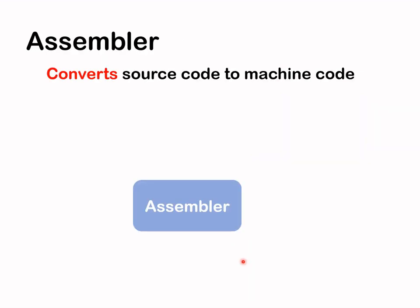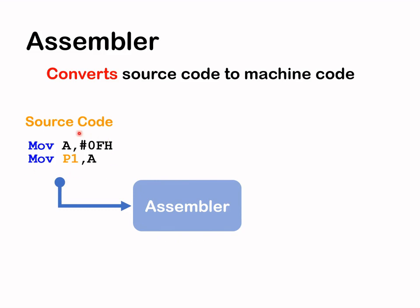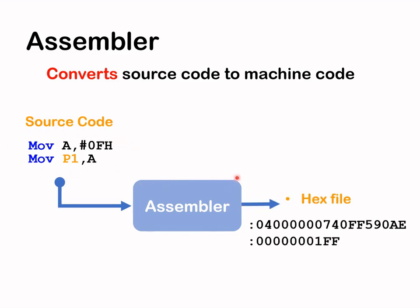All assembly language instructions we've encountered need to be converted or translated to machine code. For this you need what we call an assembler, which is a software tool. You feed your source code into the assembler, and it will produce a hex file. In addition to the hex file, you also get other files like an object file or a list file. I may make another video to describe the function of the assembler in more detail.